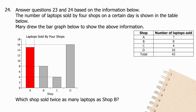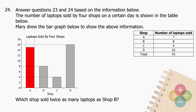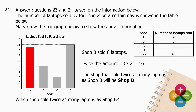Question 24: Which shop sold twice as many laptops as shop B? Shop B sold 8 laptops. Twice that amount: multiply 8 by 2 and the product is 16. The shop that sold twice as many laptops as shop B is Shop D.